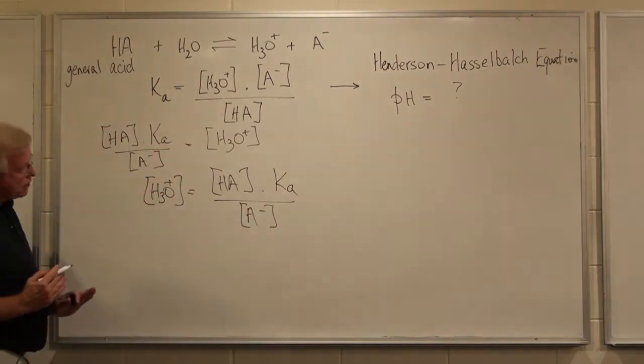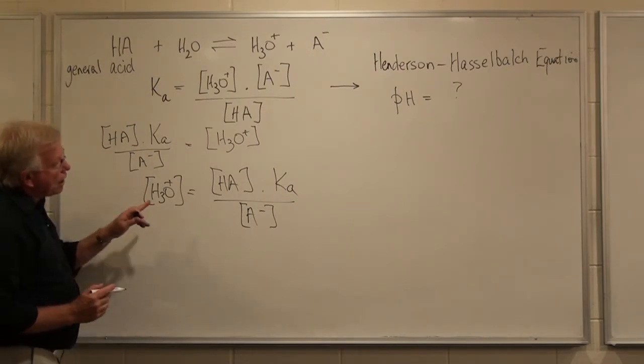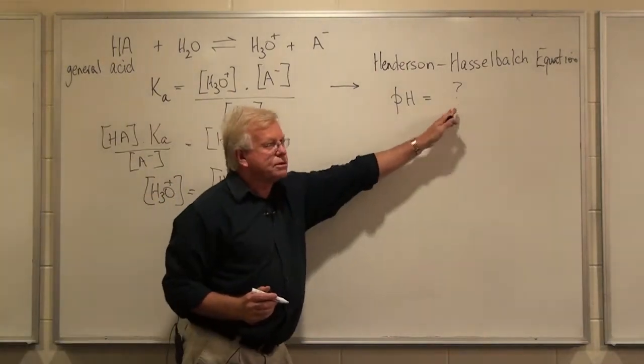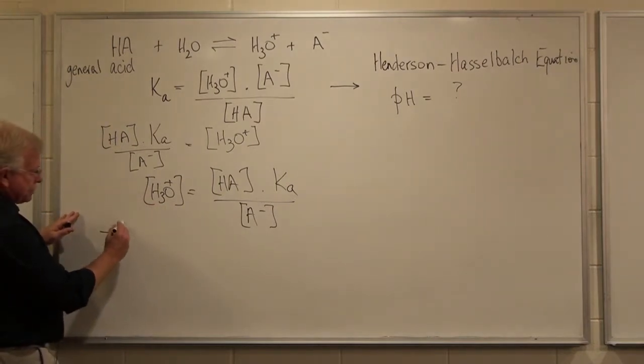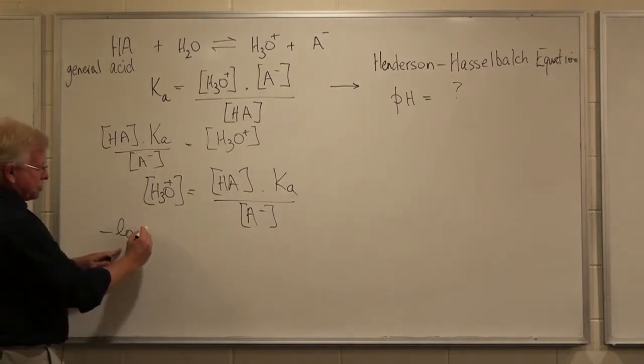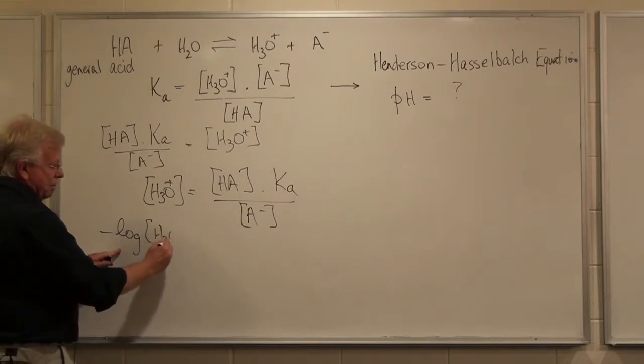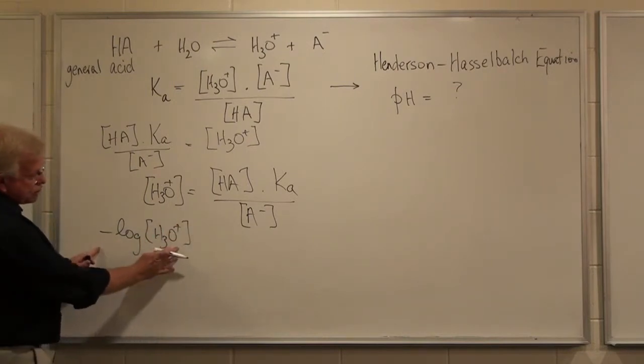So all I've done is just swivel the equation round. Now, I want to have pH equals that, and to get pH, I have to take minus the log of the concentration of hydronium ion. That's what pH is.